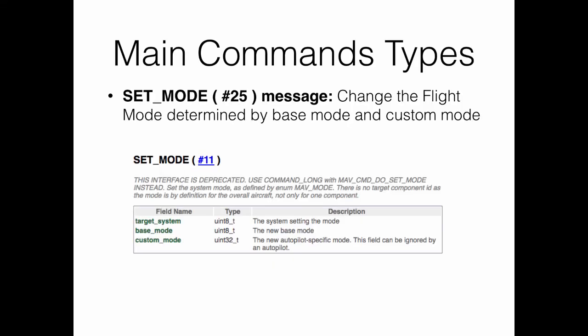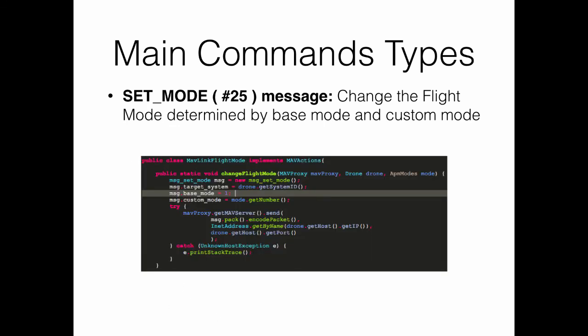Another important command is the set mode command, which allows setting the flight mode of the autopilot. It takes as arguments the target system ID of the drone, the base mode, and the custom mode. The custom mode is specified by a number that encodes the requested mode. Now having a good understanding of the different MAVLink messages and commands, we will provide an overview of the different flight modes available for a quadcopter using the APM Copter stack. Thanks for watching.